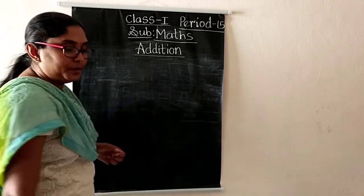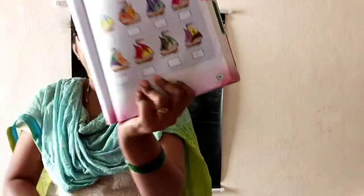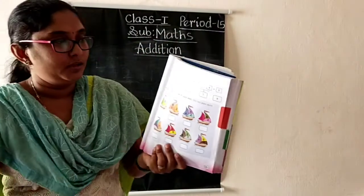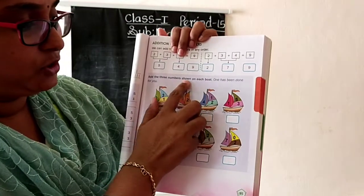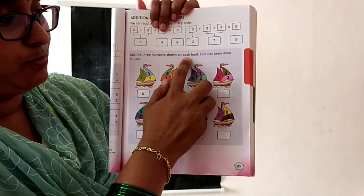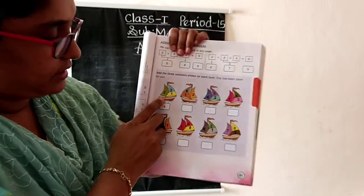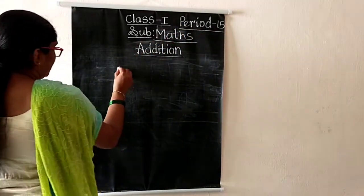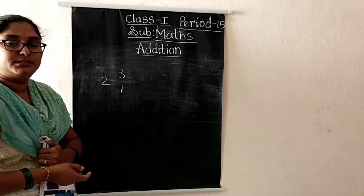Open your textbooks, page number 95. Now, addition of three numbers. Add the three numbers shown on each board. One has been done for you. Here they have given an example with three numbers: three, one, and two.